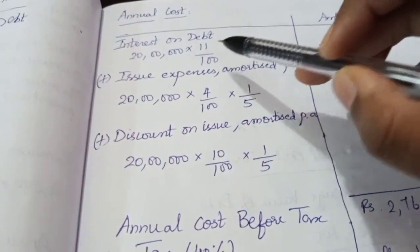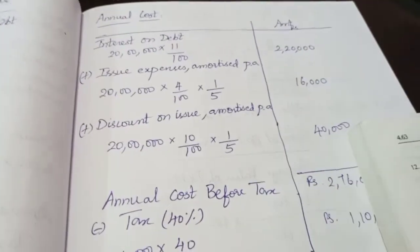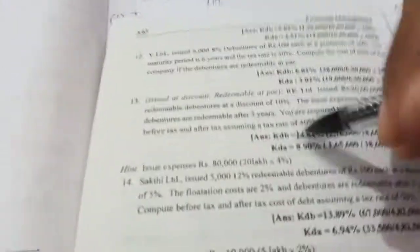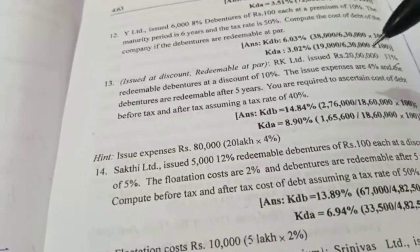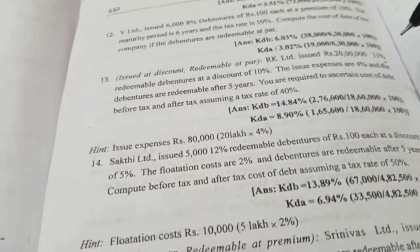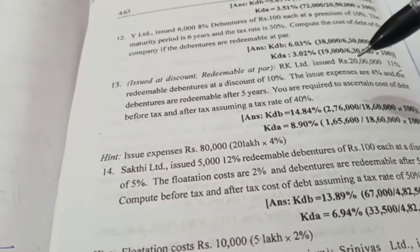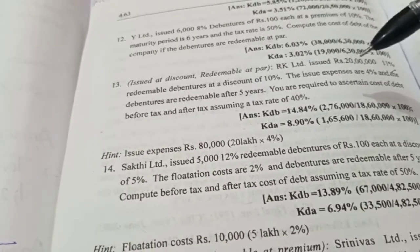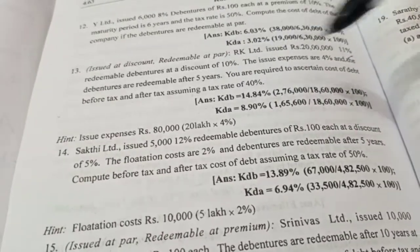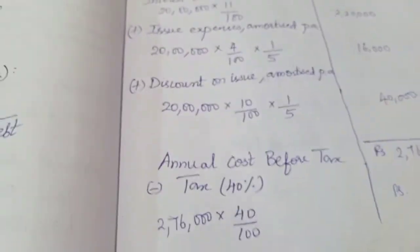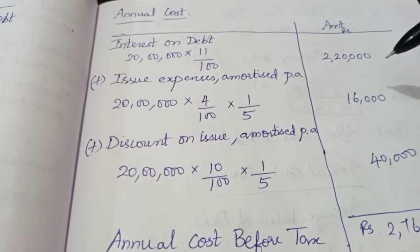The first item in the annual cost is interest on debt. We calculate this on the face value. We have 20,00,000 into 11 by 100, which gives us 2,20,000.